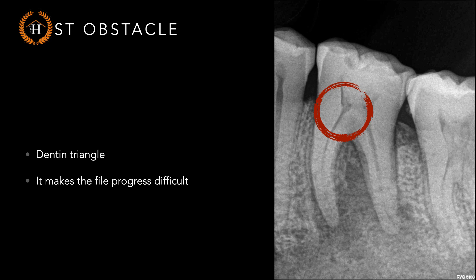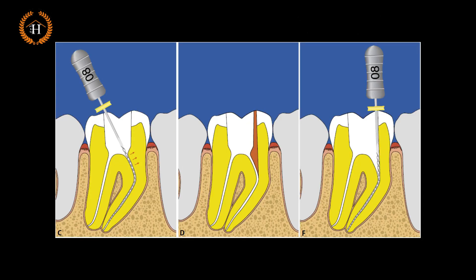It has been taught in our textbooks and various articles that we need to do a brushing action with our files and remove this dentine triangle so that we have easy passage of the file. For example, when trying to place a size 8 or 10 file inside the canal, as you can see in the graphic representation, the dentine triangle in the coronal third is not letting the file go straight inside. The stopper of the file rests on the distal cusp. Traditionally it has been said we need to remove this dentine triangle to make a smooth glide path to the apical third.